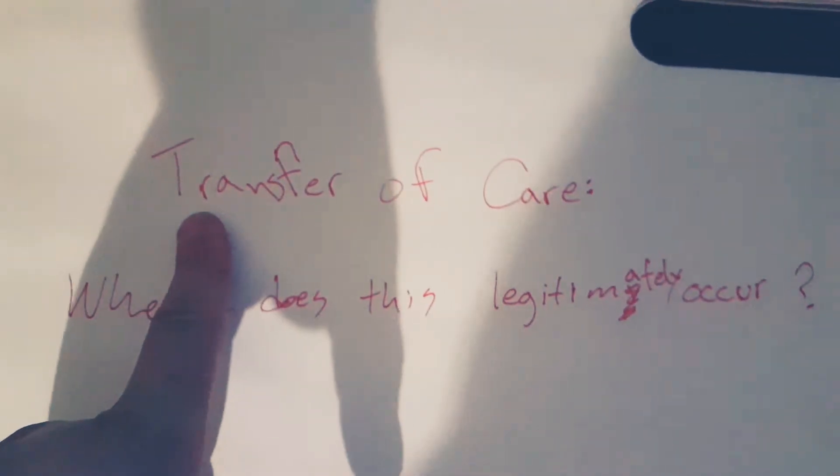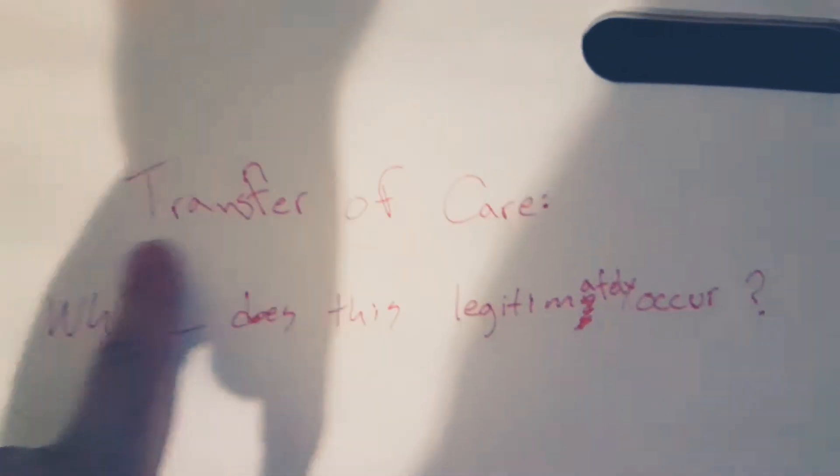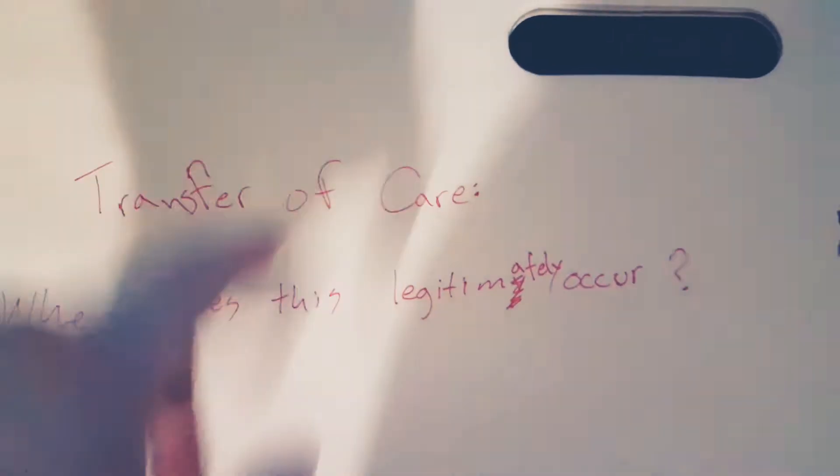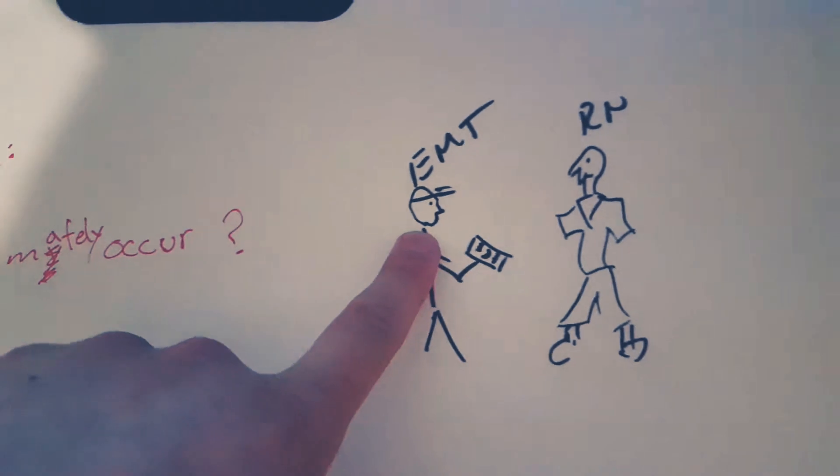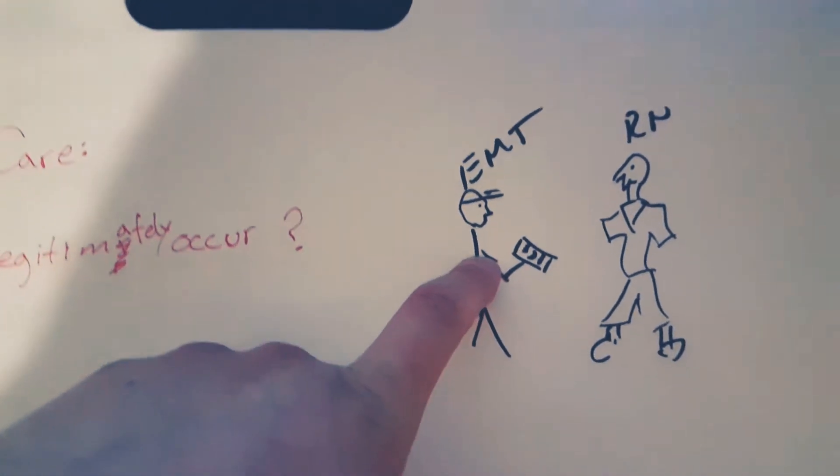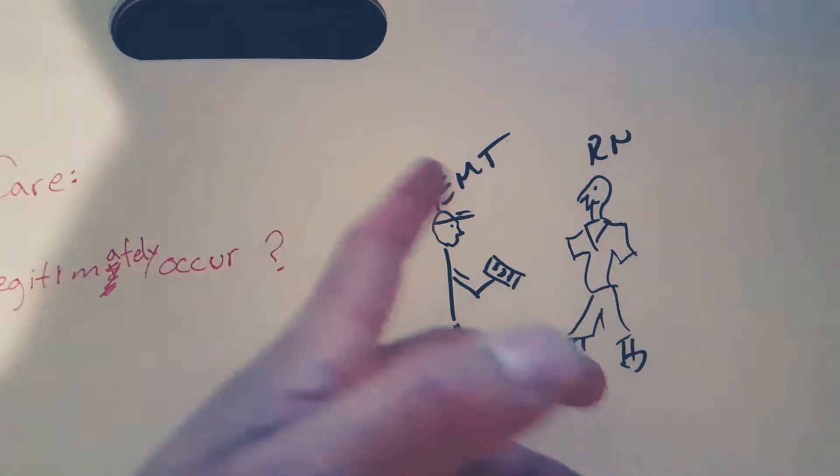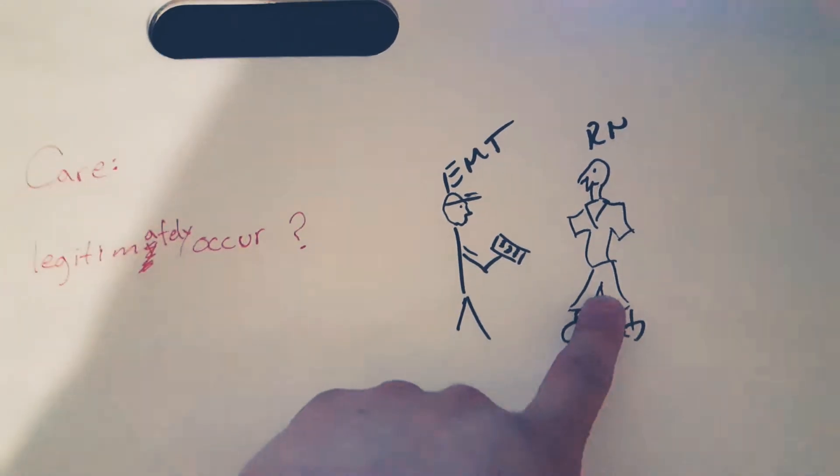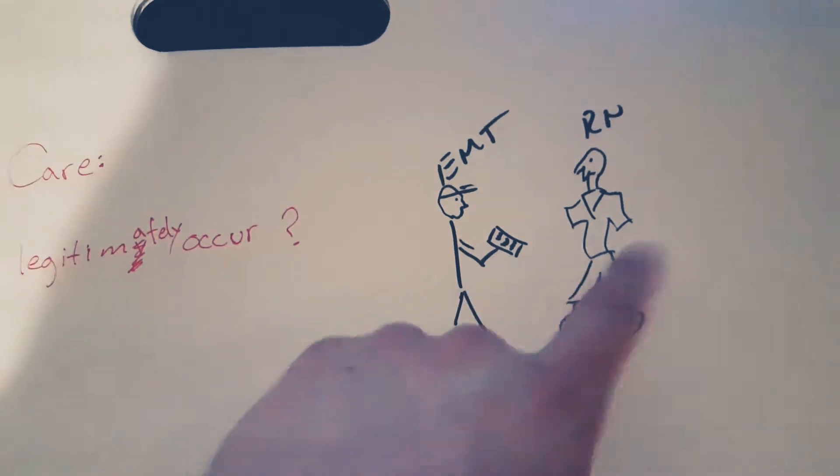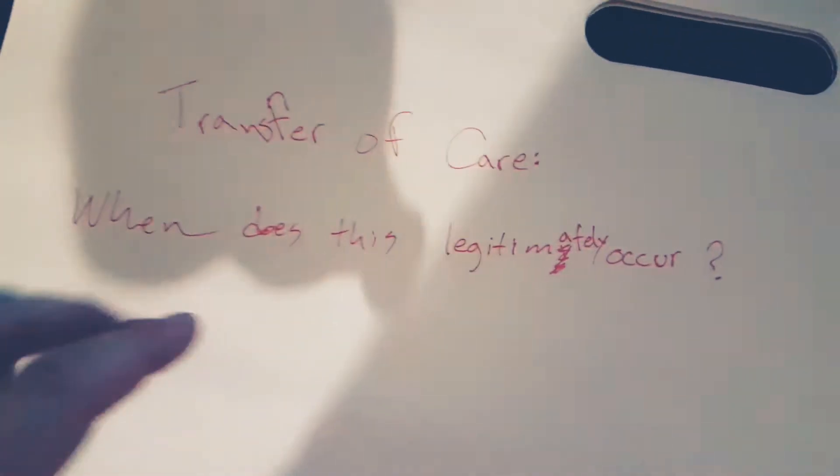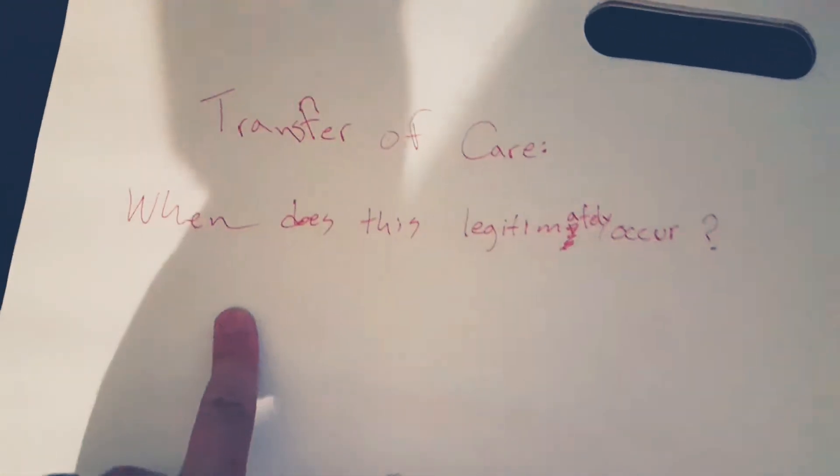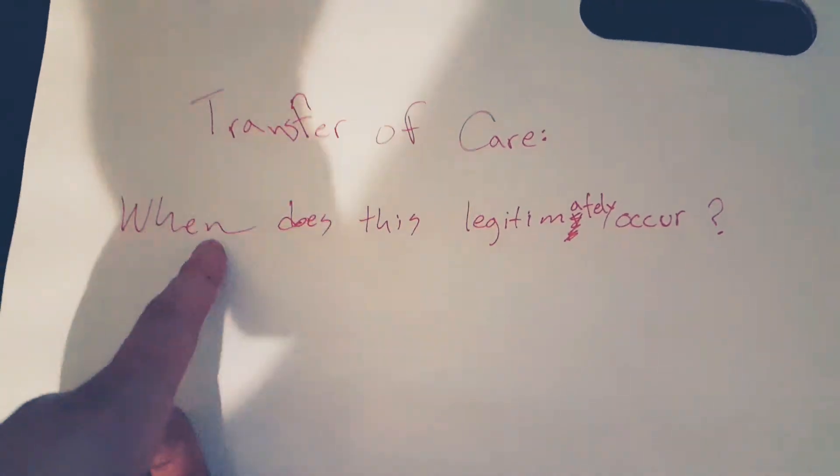So real quick: when you have a patient as an EMT, the transfer of care to somebody else actually occurs during your verbal report. When you're giving a report to the nurse or the doctor, whoever it may be, that's when the actual transfer of care legitimately happens.